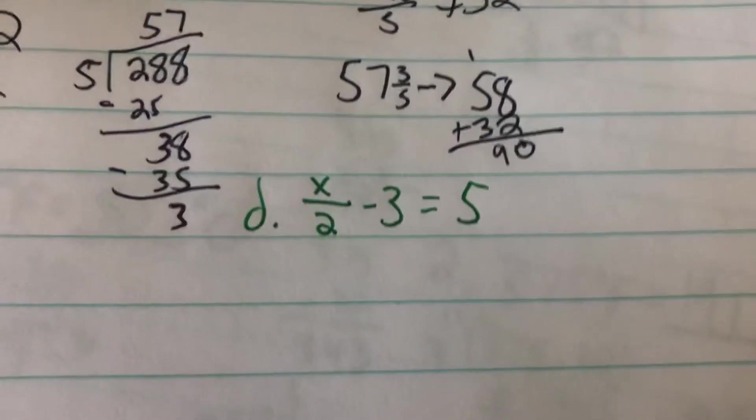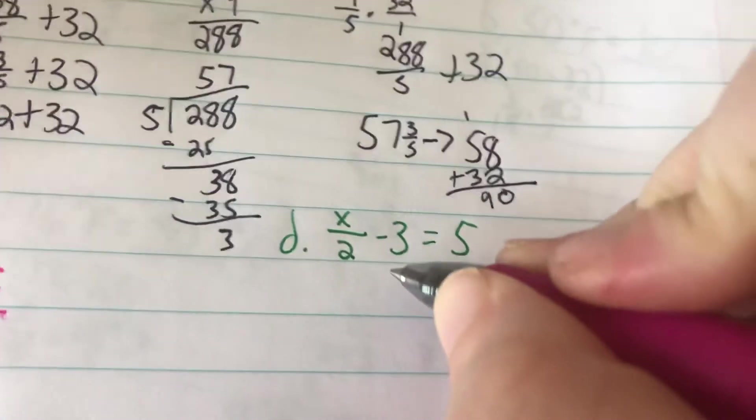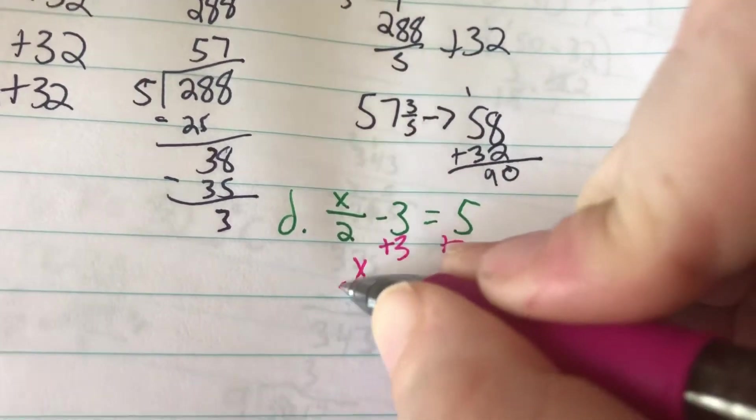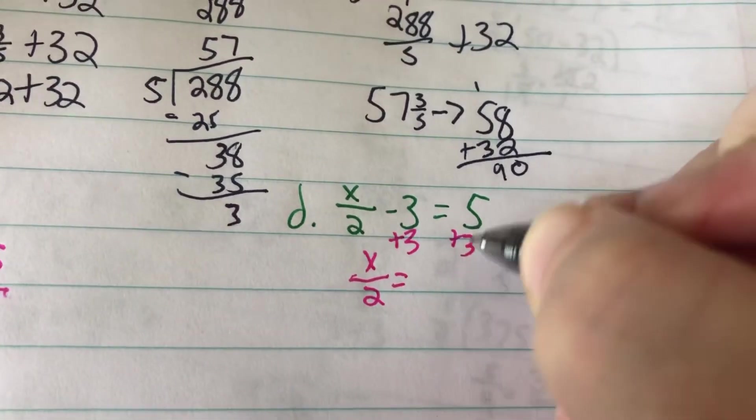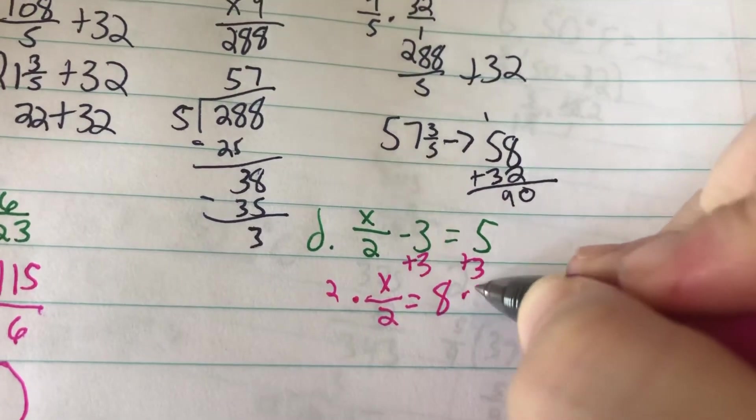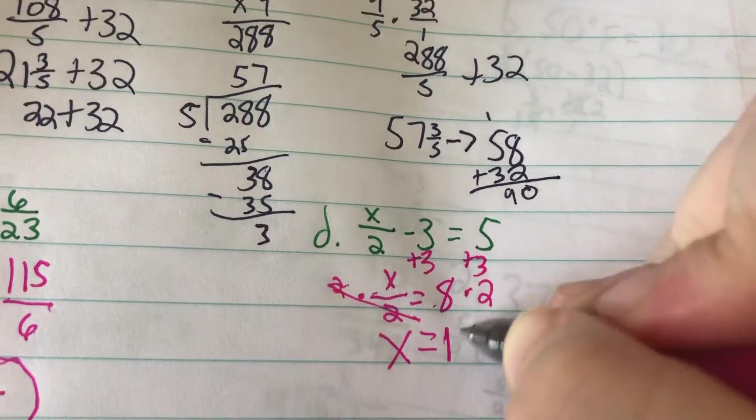On D, we have x over 2 minus 3 equals 5. To get rid of this minus 3, we add 3 to both sides. So x over 2 equals 5 plus 3, which is 8. Then we multiply both sides by 2 to get rid of the 2. So x equals 8 times 2, which is 16.